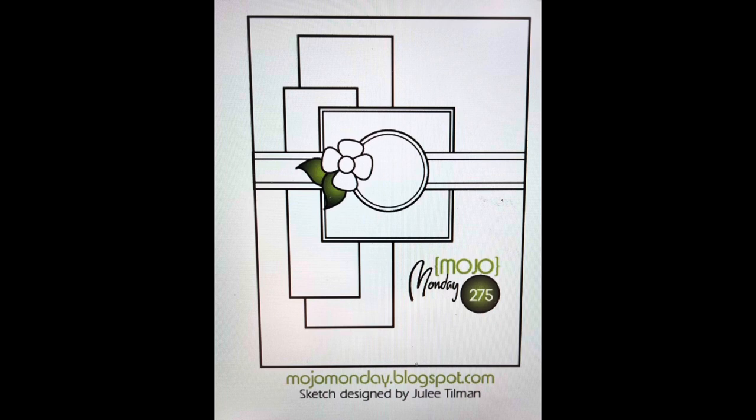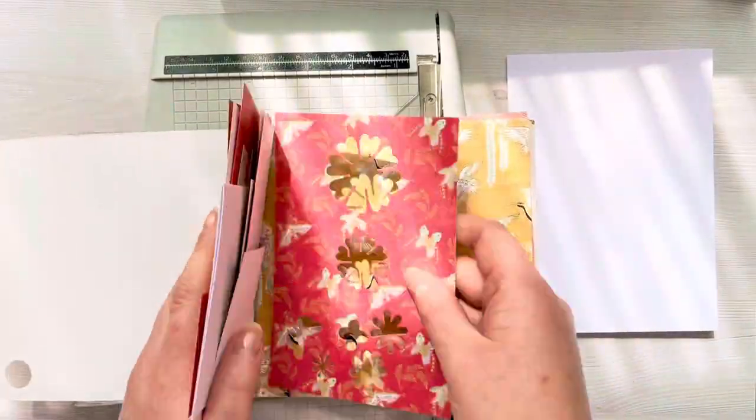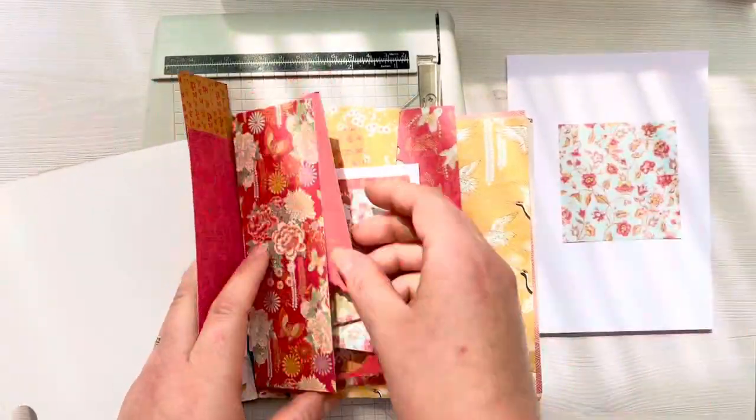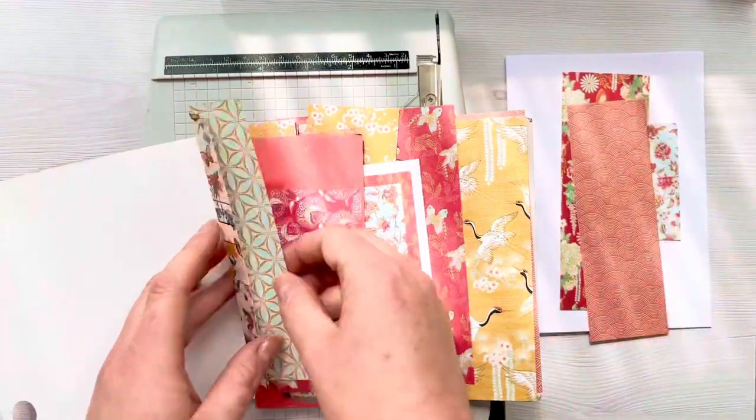This is the card sketch that I'm using today. It's from Mojo Monday and it's number 275. We're going to make two cards and see how, depending on the patterned paper that you use, each one will look slightly different.